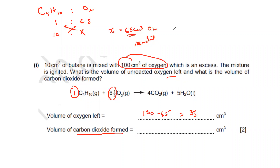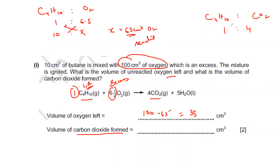For the volume of carbon dioxide: we always use the limiting reagent to find the product. The limiting reagent is butane, since oxygen is in excess. The ratio of butane to CO₂ is 1 : 4 — one molecule of butane gives four molecules of carbon dioxide. If we have 10 cm³ of butane, cross multiplying gives X = 40 cm³ of carbon dioxide.